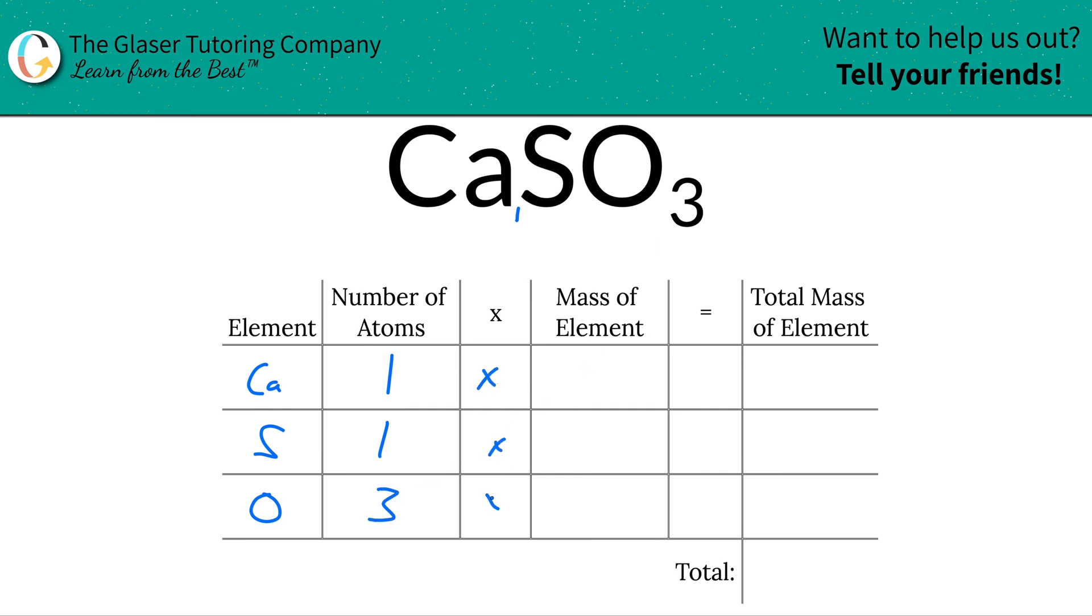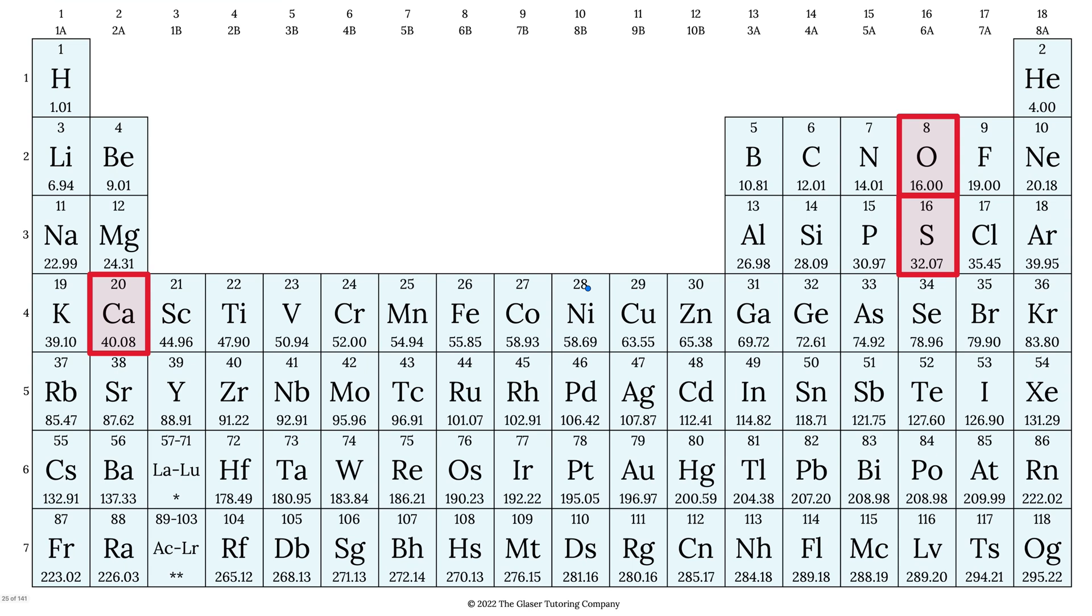Then you're going to take those number of atoms now, and you're going to multiply it by the mass of each particular element. So where are we going to find these masses of calcium, sulfur, and oxygen? You got it. Periodic table. Let's take a look.